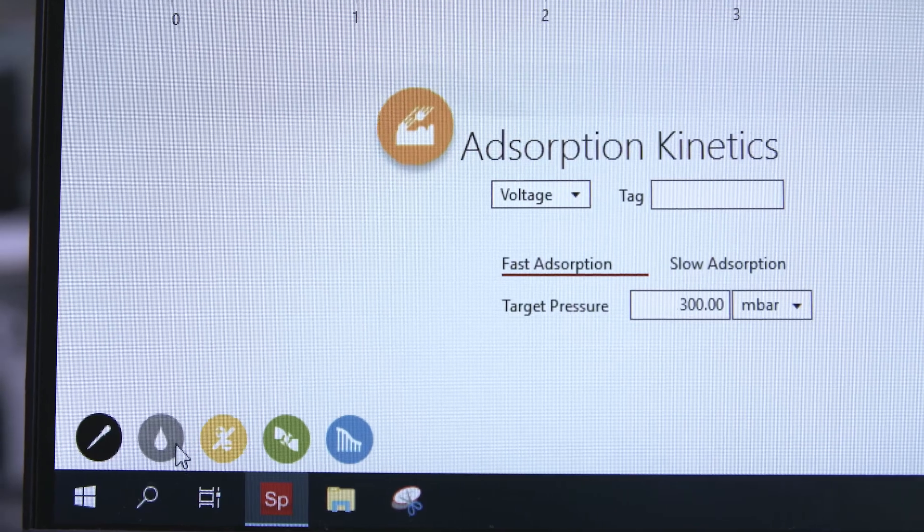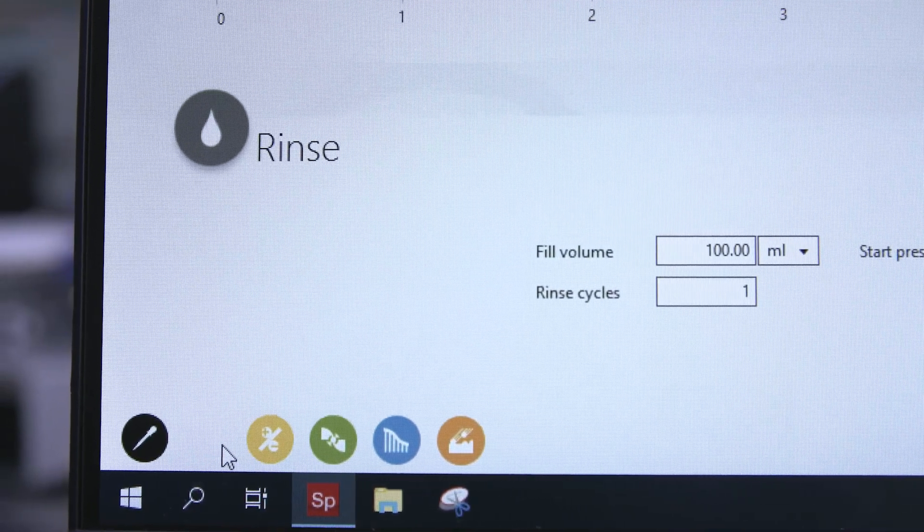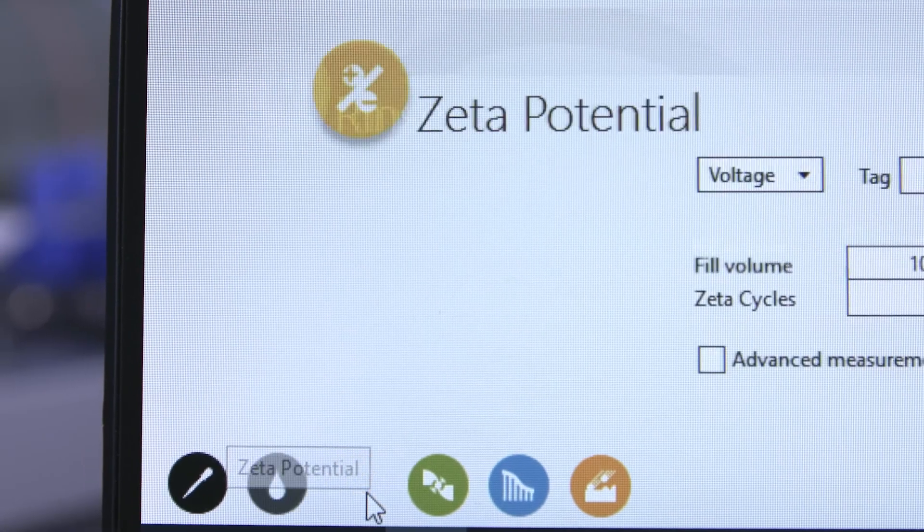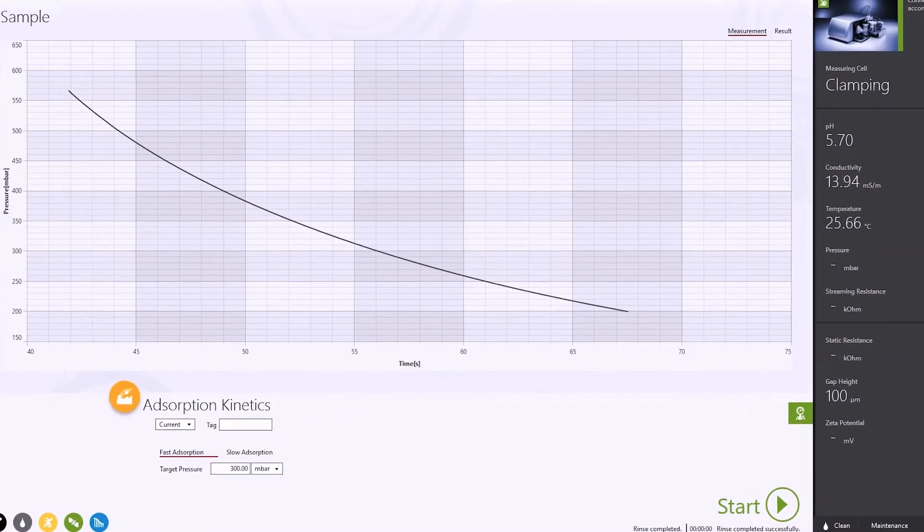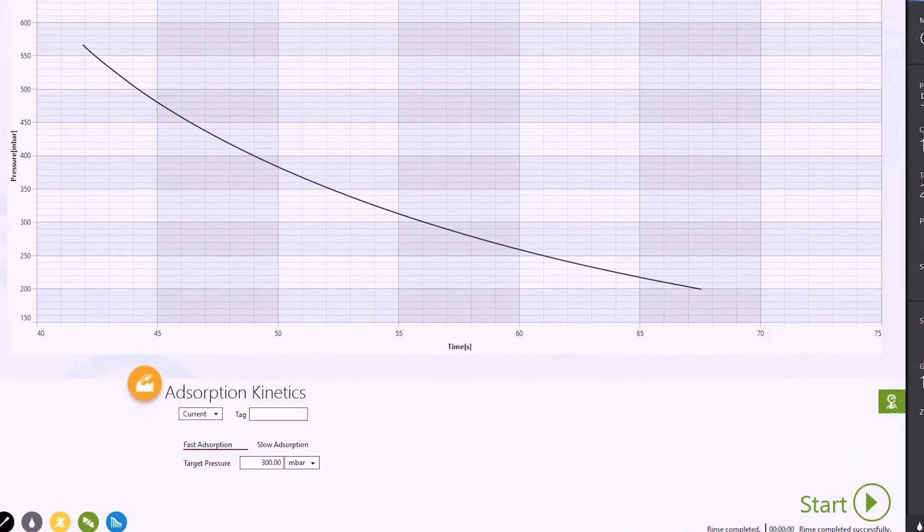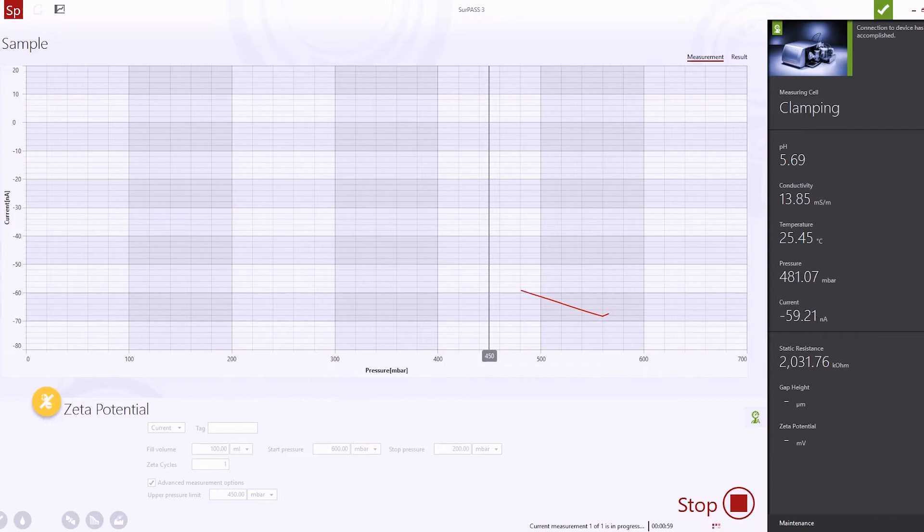The software offers predefined procedures for rinsing, zeta potential analysis, and recording of adsorption kinetics. A single-point zeta potential measurement can be performed in less than two minutes.